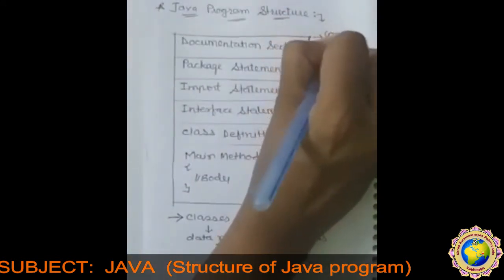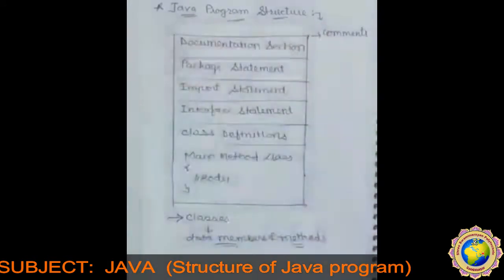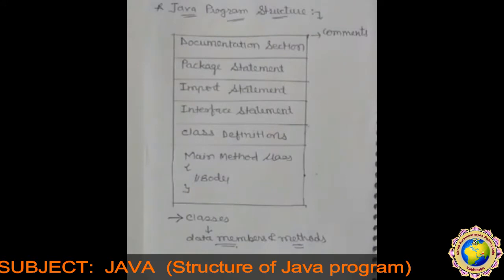Comments must explain the why and what of the classes, and the how of the algorithms. This would greatly help to maintain a program. There are two styles of comment. As we discussed earlier, Java also uses a third style of comment — that is the documentation comment.